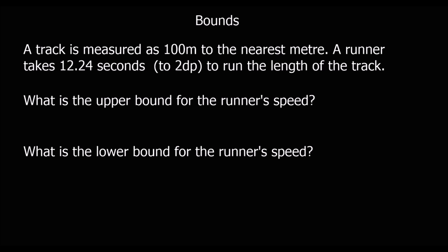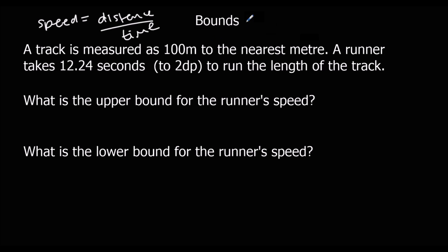A track is measured as 100 meters to the nearest meter. A runner takes 12.24 seconds to two decimal places to run the length. Speed is distance over time. For the track: the next one up is 101 and the next one down is 99, so the lower bound is 99.5 and the upper bound is 100.5.